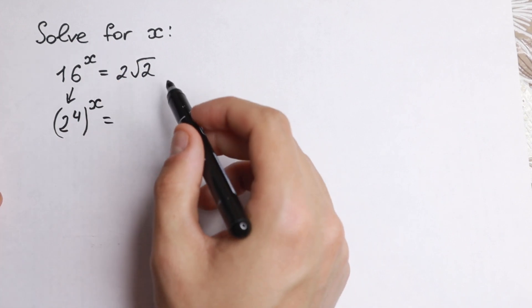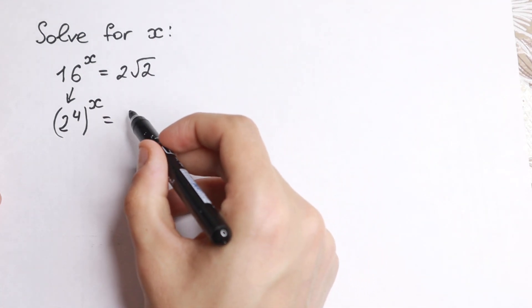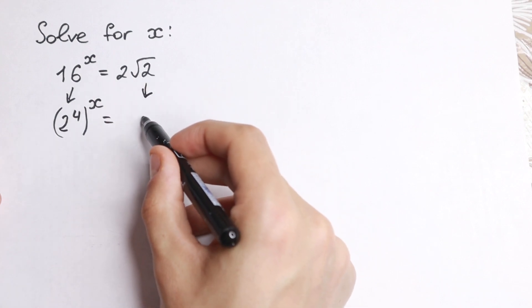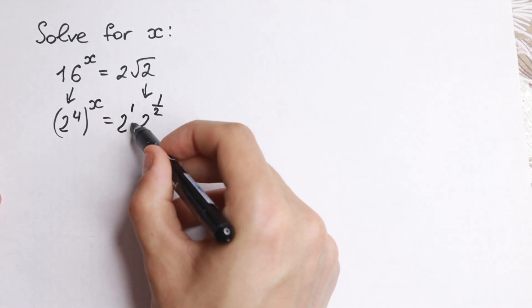And we all know that square root sign signals us that right here we have power one half. Right here if we're talking about square root, this is 2 to the power one half, and this 2 to the power first.